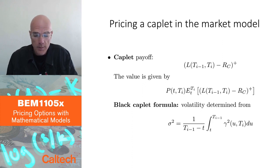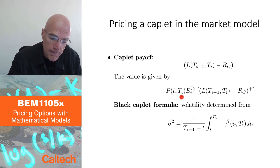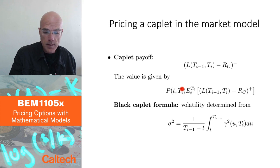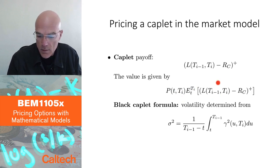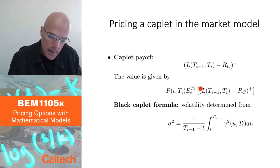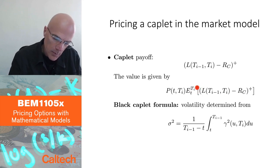The value is given by the price of the discounting asset — the T_i bond — times the expected value under the probability corresponding to this discounting asset, applied to the payoff. So instead of discounting the payoff under the usual pricing probability when you discount by the bank account, I change the probability and place the discounting asset price in front. We will talk about this more in the next set of slides.